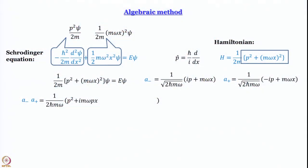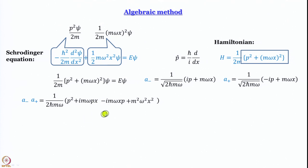Next we get the cross terms: ip times mωx gives imω·px, and mωx times (−ip) gives −imω·xp. Finally, mωx times mωx gives m²ω²x² (x is an operator). So inside the bracket we have: p² + imω·px − imω·xp + m²ω²x². That is your a⁻a⁺.